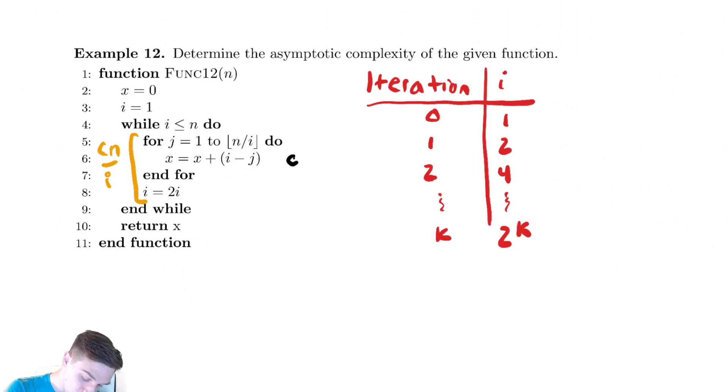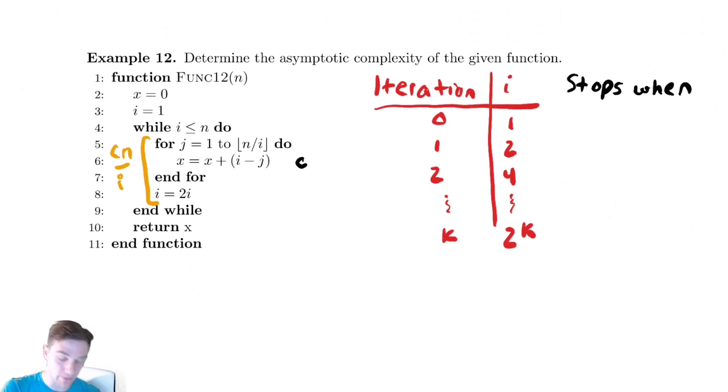When does this stop? Well, it stops when the value of i, which is 2 to the k, is equal to the stopping condition of the while loop.